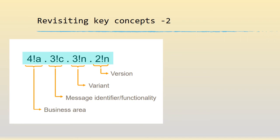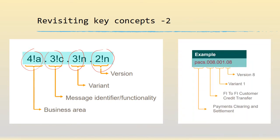Let's look at the message structure again. We know that the first four alpha characters are the business area, the next three characters are the message identifier, the next three numeric are for the variant, and the final two are for the version. For PAX 008 001 08: PAX is the business area meaning payments clearing and settlement, 008 is for the FI to FI customer credit transfer, 001 is the variant, and 08 is the version which keeps changing.